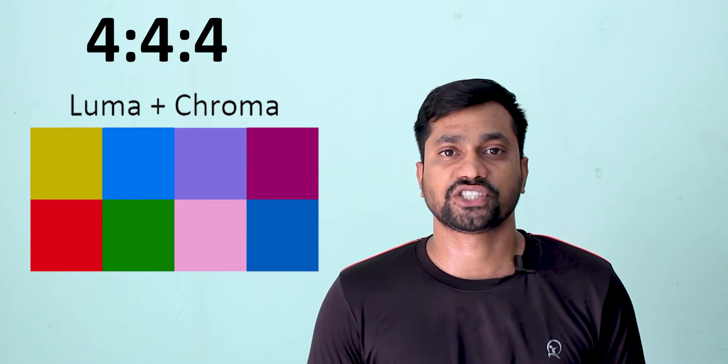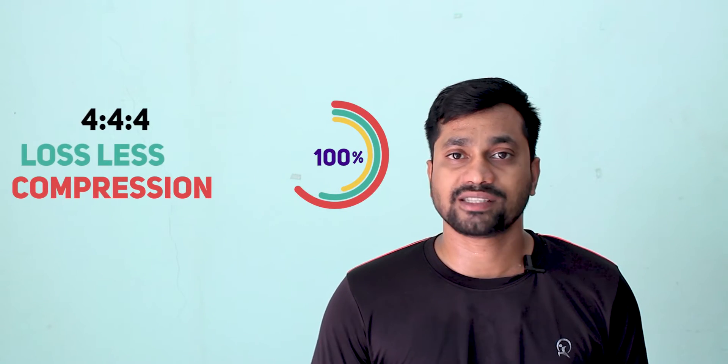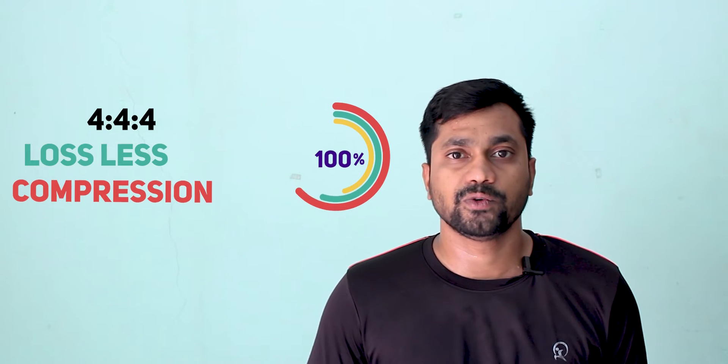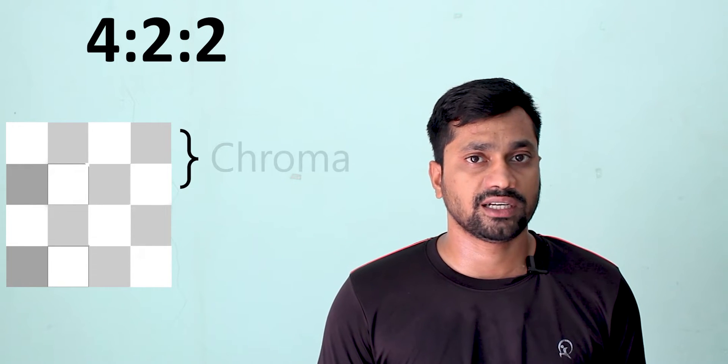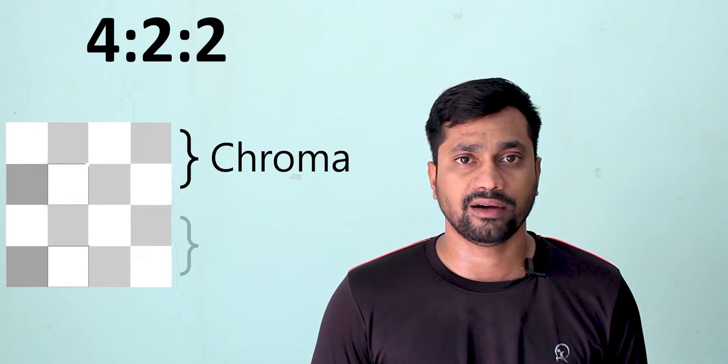In 4:4:4, we didn't change or modify anything, so it is considered lossless compression and we get 100% clarity. The second popular chroma subsampling is 4:2:2. The first number four represents four pixel blocks horizontally and vertically — bottom two for luma and top two for chroma.